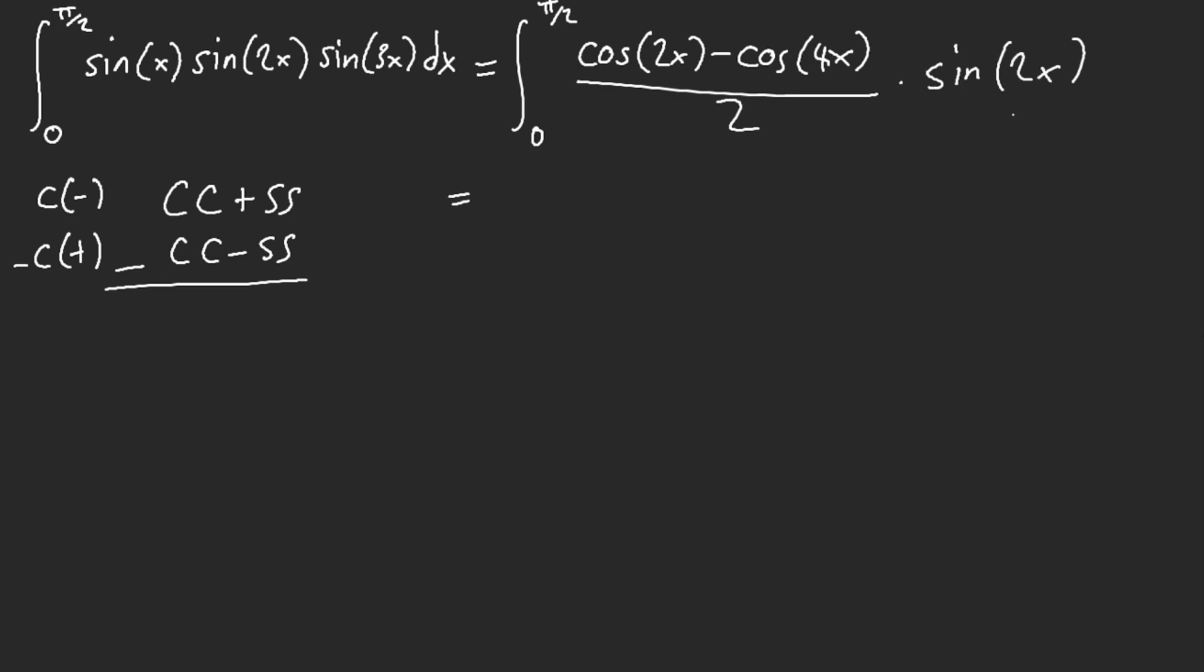Okay, I'm going to let u equal 2x because this is bothering me. So we get 1/4th, 0 to pi, and then we got cosine of u, sine of u, and then minus...